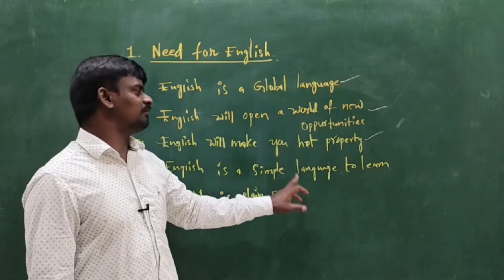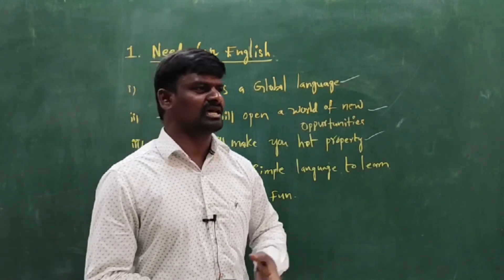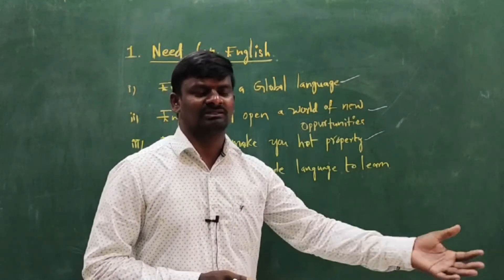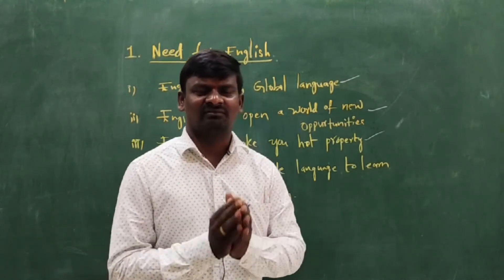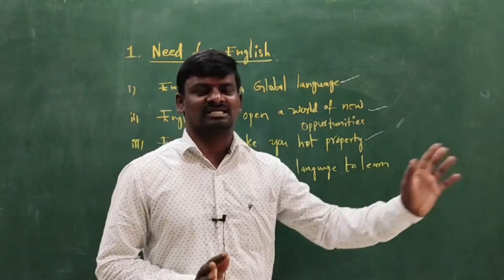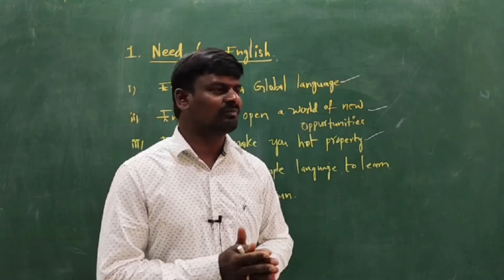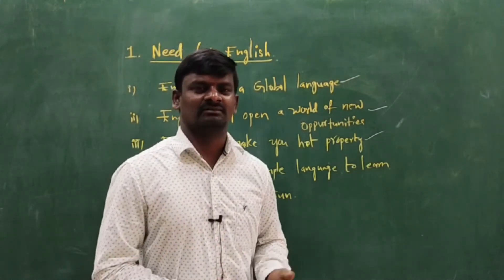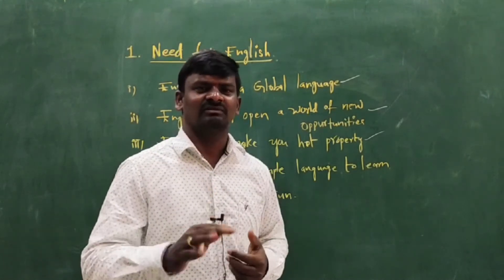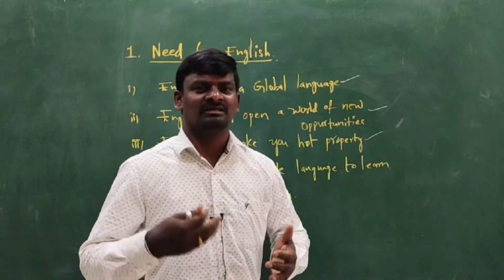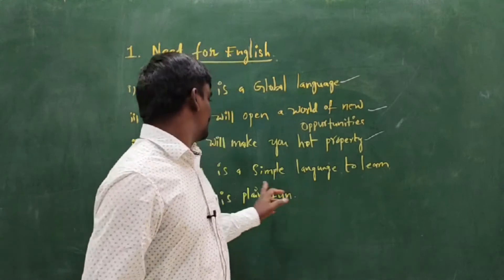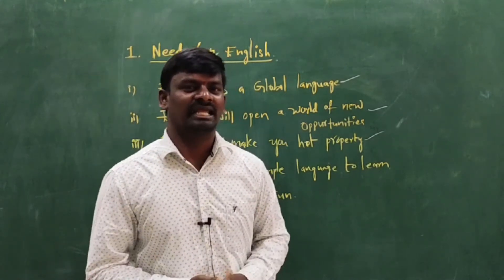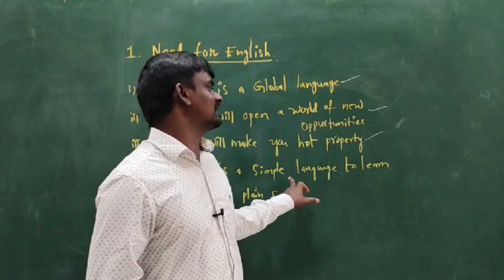Next, English is a simple language to learn. How is English a simple language? If you want to learn any new language, there are many grammatical structures to follow. But in English, we have only fixed alphabets and fixed structures, which you can learn very easily. With the help of communicating with each other, you can develop yourself. You can start by speaking basic English first, and then follow the grammatical order. Through listening, speaking, reading, and writing, you can understand that English is a simple language to learn.